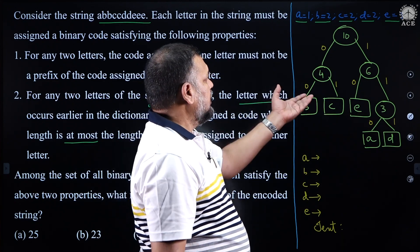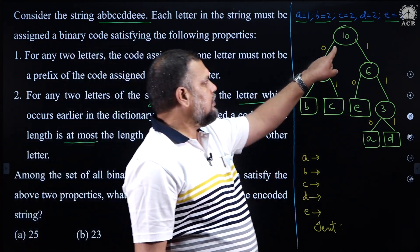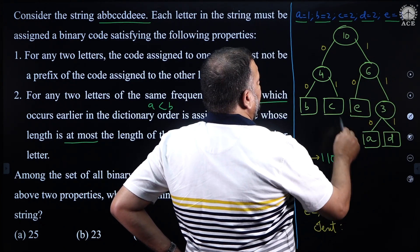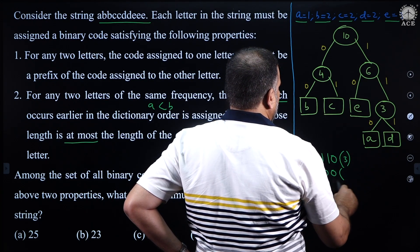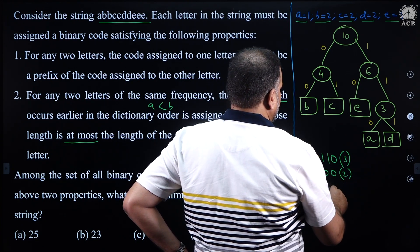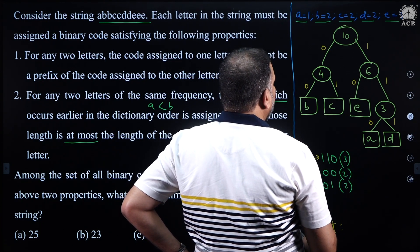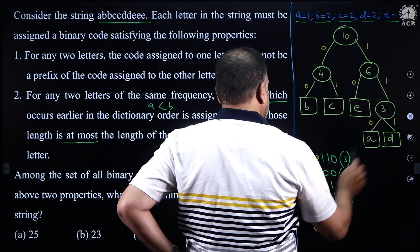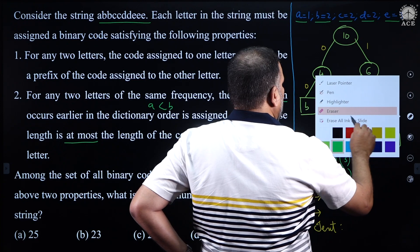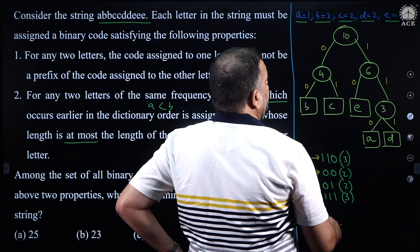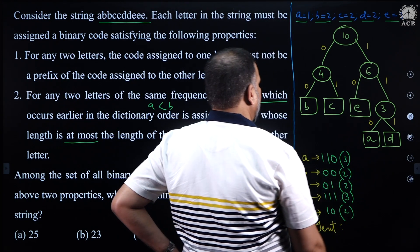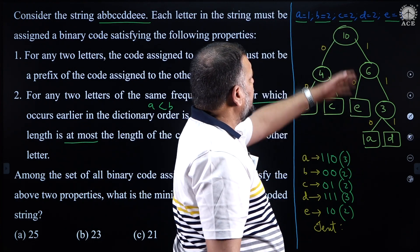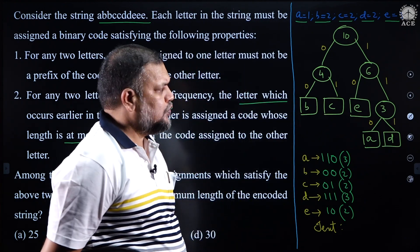Assigning codes: A gets code 1,1,0 — 3 bits. B gets code 0,0 — 2 bits. C gets code 0,1 — 2 bits. D gets code 1,1,1 — 3 bits. E gets 2 bits. B and C have fewer bits than D, following property 2, since b and c occur earlier in dictionary order than d which gets the longer code.